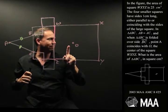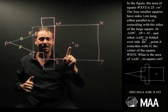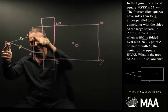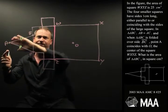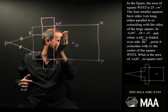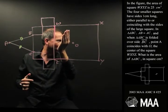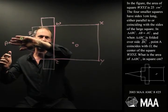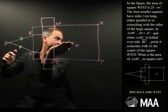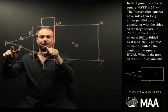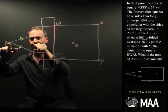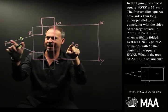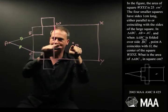And when triangle ABC is folded over side BC — like something like that, I guess — the point A coincides with O, the center of the square. So my picture's a little bit off, but when I fold this length over here, A lands on O, sorry, like that.